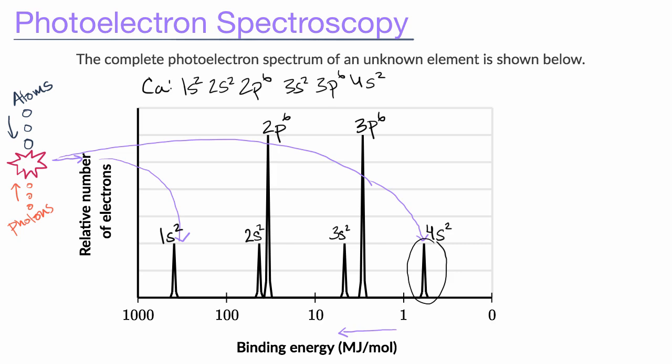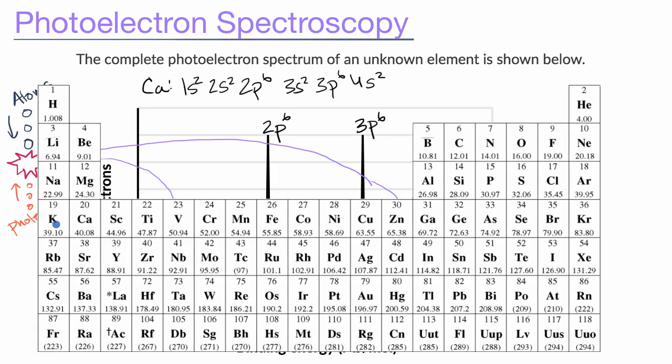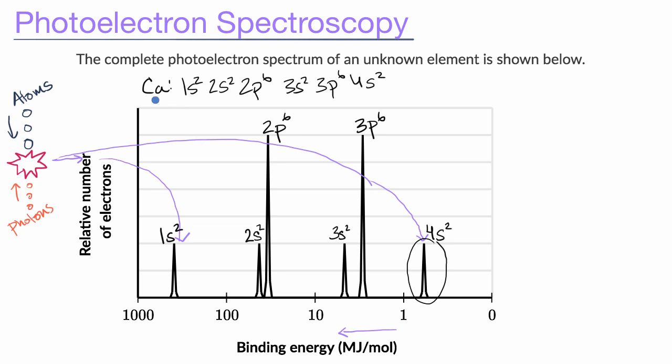Well, the difference between calcium and potassium is that potassium only has one electron in the 4s subshell, while calcium has two electrons in the 4s subshell. So the way it would look different, if we were, instead of thinking about calcium, if we're thinking about potassium, it would look something like this. It would be half as high.